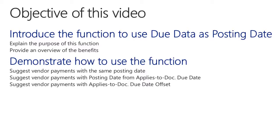First, I will use the Suggest Vendor Payments batch without this function and review the results. Next, I will run the batch once again, but now with the Calculate Posting Date from Applies to Document Number Due Date field selected, and I will then review the difference with the first batch. Finally, I will also demonstrate the function to offset the due date.